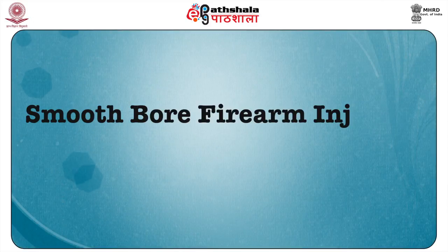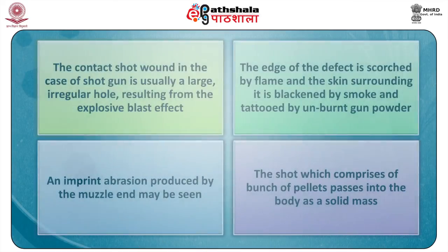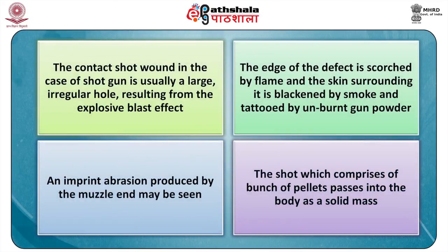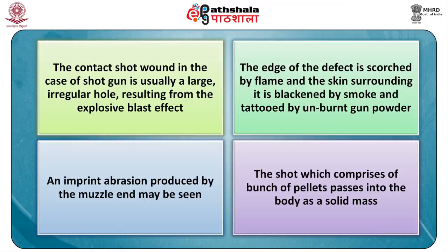Turning to smooth bore firearm injury — in a contact shotgun wound, the wound is usually a large irregular hole resulting from the explosive blast effect. The edge of the defect is scorched by flame and the surrounding skin is blackened by smoke and tattooed by unburnt gunpowder. An imprint abrasion produced by the muzzle end may be seen. The shot, comprising a bunch of pellets, passes into the body as a solid mass. The injured tissue is usually cherry red in color.